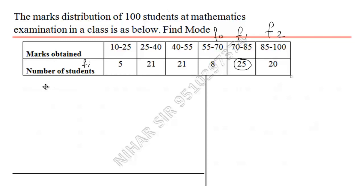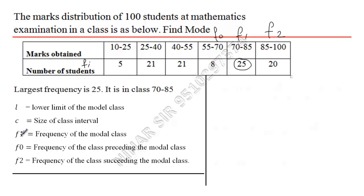Now just write all the values. Modal class is 70 to 85 because it has the largest frequency. Now we know all the information: f1 is 25, f0 is 8, and f2 is 20.